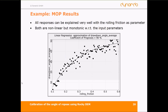We go on with the metamodel of optimal prognosis, here shown for the drawdown angle. This shows that to explain the drawdown angle or the repose angle, we only need one parameter — the rolling friction. This is our most important parameter, describing both angles very well. As you can see, we have a nonlinear but monotonic equation, and only one important input parameter, which is very important for the next step.